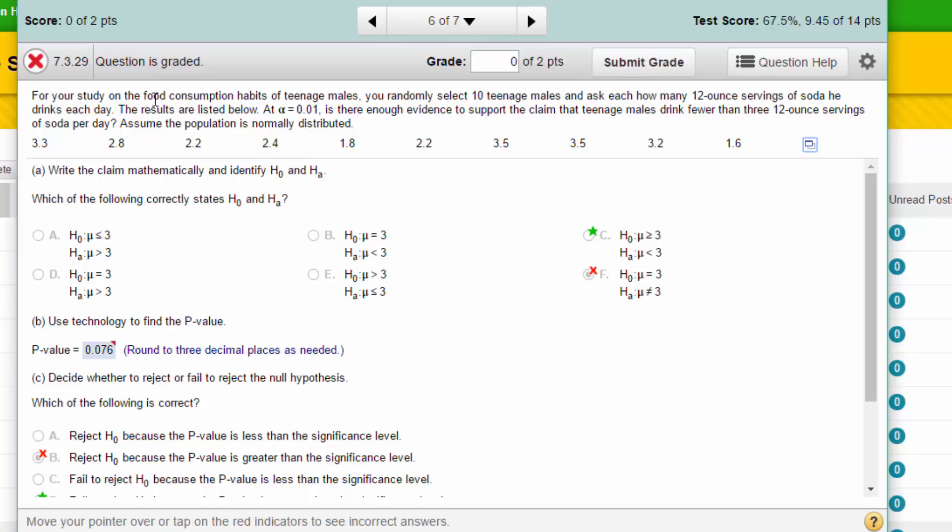We've got a study of the food consumption of teenage males. We select 10 and ask how many 12-ounce servings of soda each day, and we want to test this at an alpha of 0.01. We want to know is there enough evidence to support the claim that teenage males drink fewer than three 12-ounce servings of soda per day.